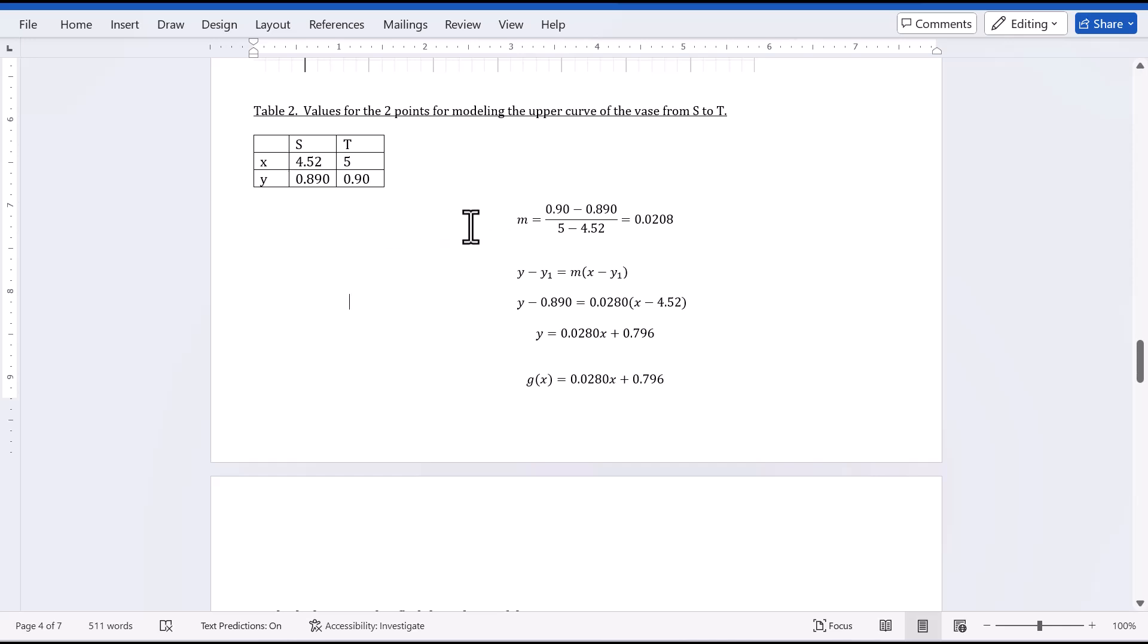First of all, I figured out the slope. Then use the point slope form to get g(x) equals 0.0280x plus 0.796.